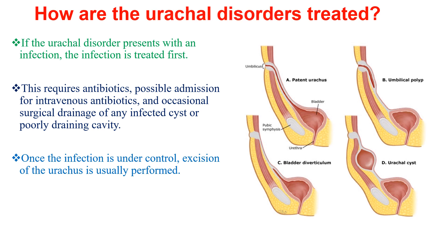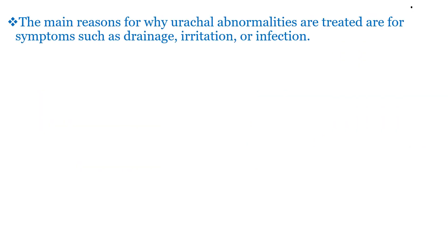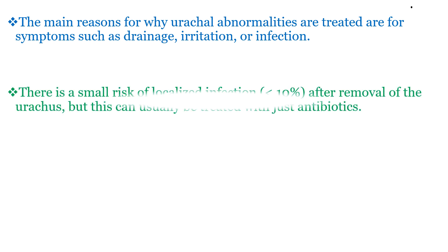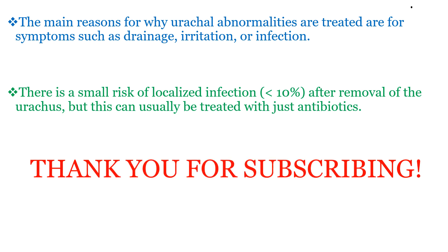When it comes to treatment: if the urachal disorder presents with an infection, the infection is treated first. This requires antibiotics, possible admission for IV antibiotics, and occasionally surgical drainage of any infected cysts or poorly drained cavity. Once the infection is under control, excision of the urachus is usually performed. The main reasons for urachal abnormality treatment are symptoms such as drainage, irritation, or infection. Most cases will improve completely with no recurrence, but there is a small risk of localized infection after removal of the urachus, which can usually be treated with just antibiotics.